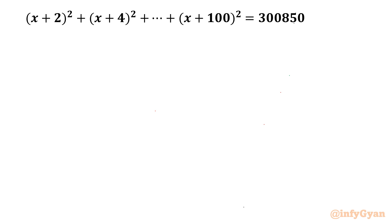Welcome to Infigyar, my dear friends, in this very powerful and exciting video of algebraic challenging equations. We are going to take up one very interesting question from Olympiads. One equation is given and we have to find real-valued x. The equation is (x+2)² + (x+4)² + ... + (x+100)² = 3850. I will solve this question in two different methods.